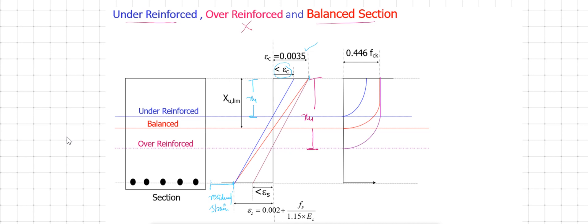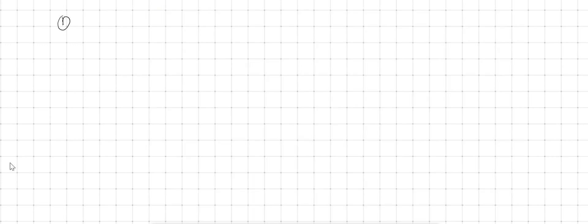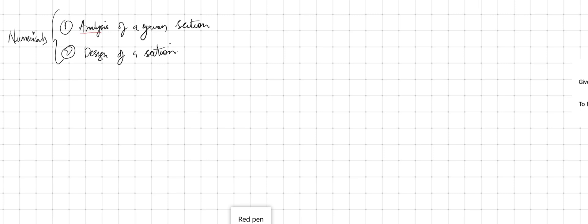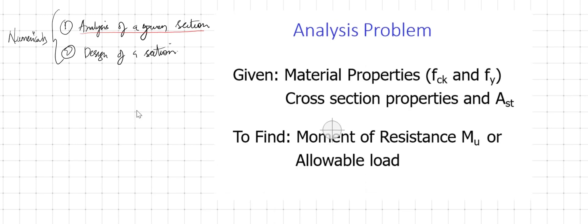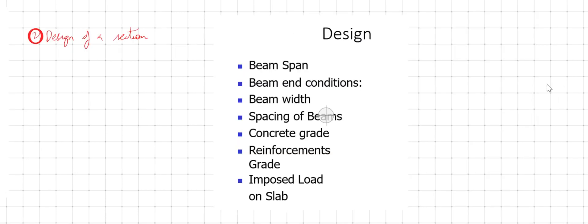As a designer, always prefer an under-reinforced or balanced section; never go for an over-reinforced section. Now we move on to numerical problems. There are two types: analysis of a given section and design of a section. In analysis problems, the material properties — grade of concrete, grade of steel — and cross-sectional properties — width, breadth, and area of steel — are given. You are asked to find the moment carrying capacity or allowable load.